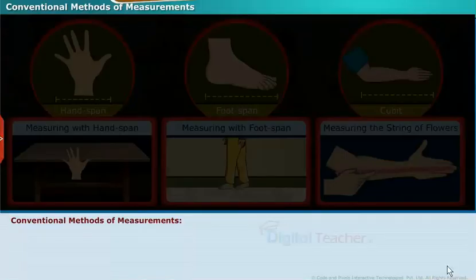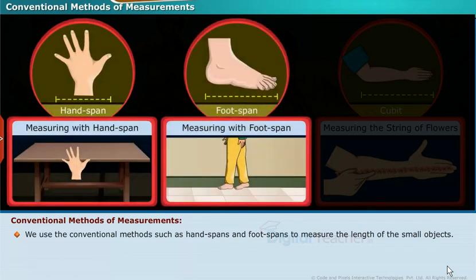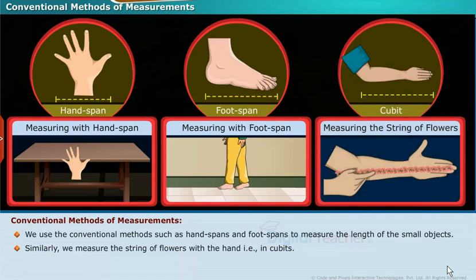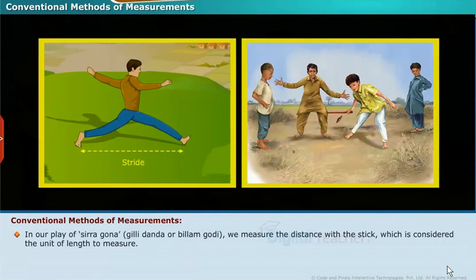Let us see some conventional methods of measurement. We use conventional methods such as hand spans and foot spans to measure the length of a small object. Similarly, we measure the string of flowers with hand, that is in cubits. Moreover, strides are used to measure the length and breadth of the ground. In games like Gili Danda, we measure the distance with a stick, which is considered the unit of length.